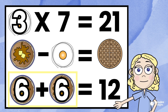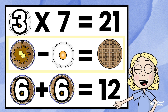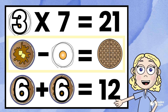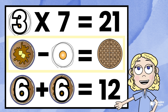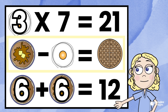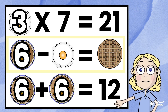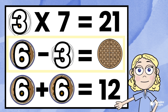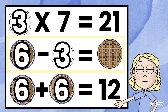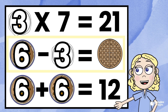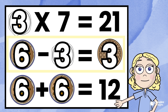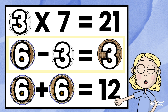Let's go back up to this problem. Pancake minus egg equals waffle. We know the pancake represents six. We know the egg represents three. So six minus three equals three. The waffle represents three.